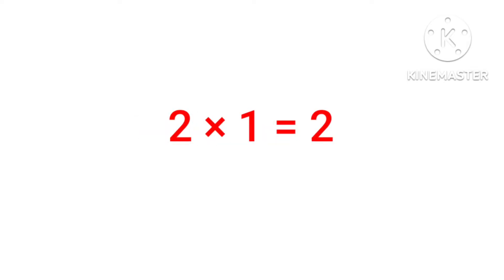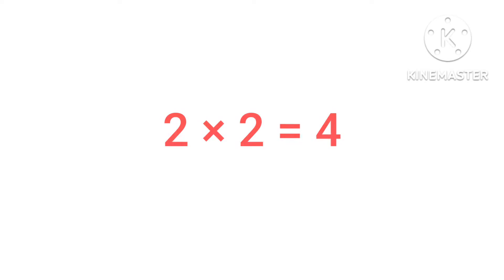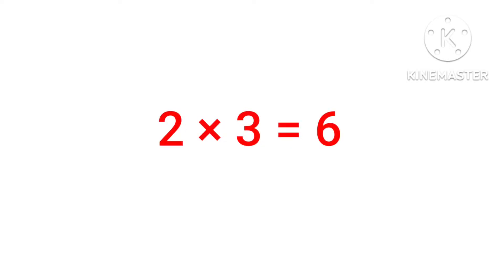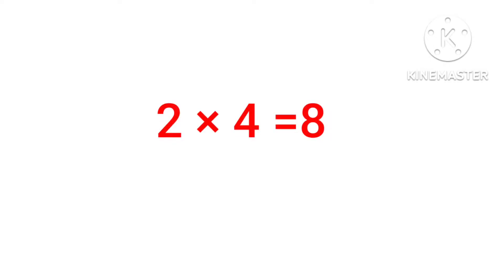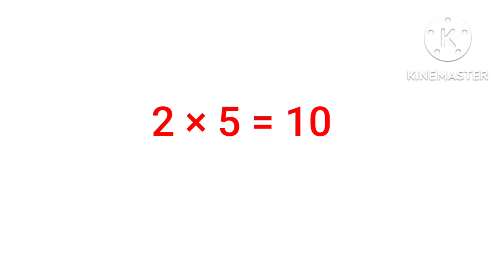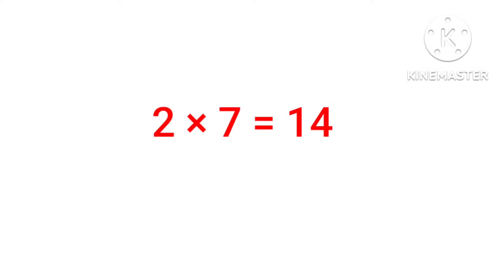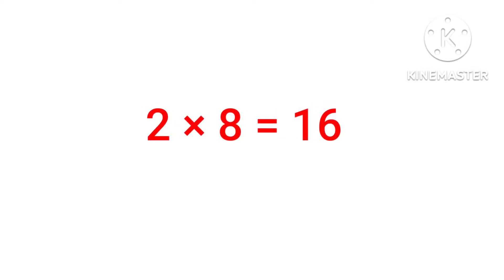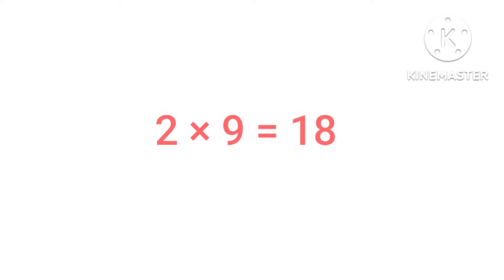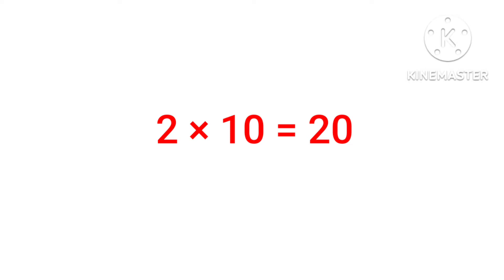Table of 2. 2 1's are 2, 2 2's are 4, 2 3's are 6, 2 4's are 8, 2 5's are 10, 2 6's are 12, 2 7's are 14, 2 8's are 16, 2 9's are 18, 2 10's are 20.